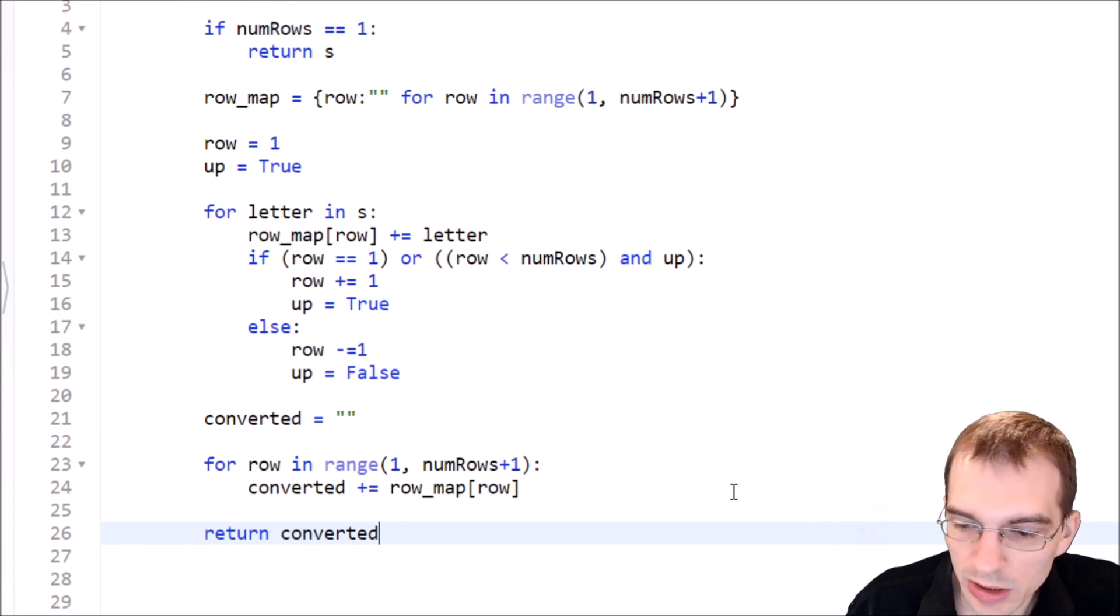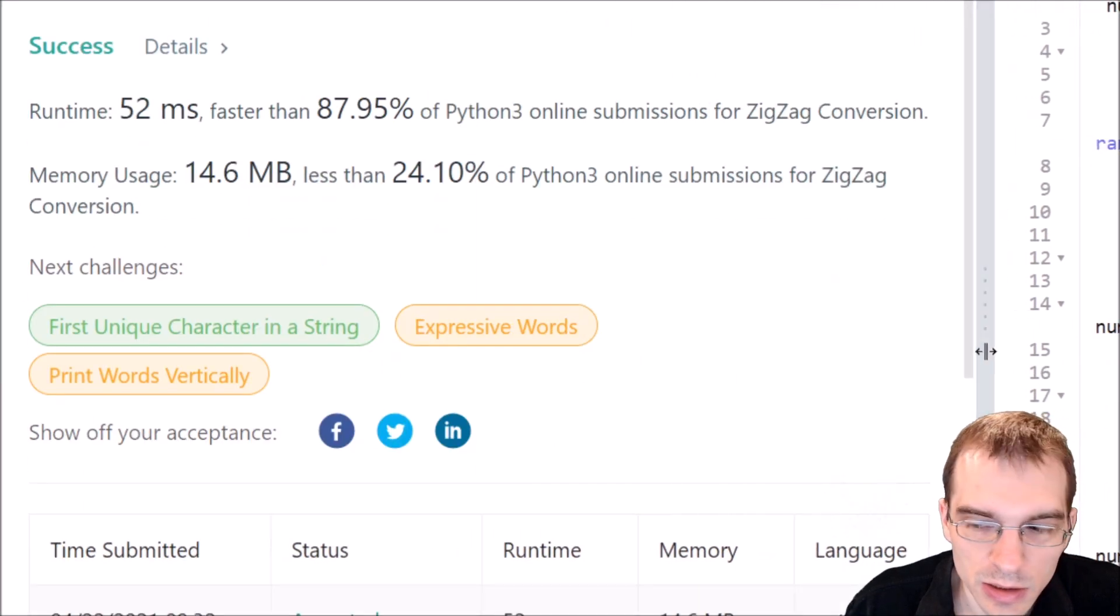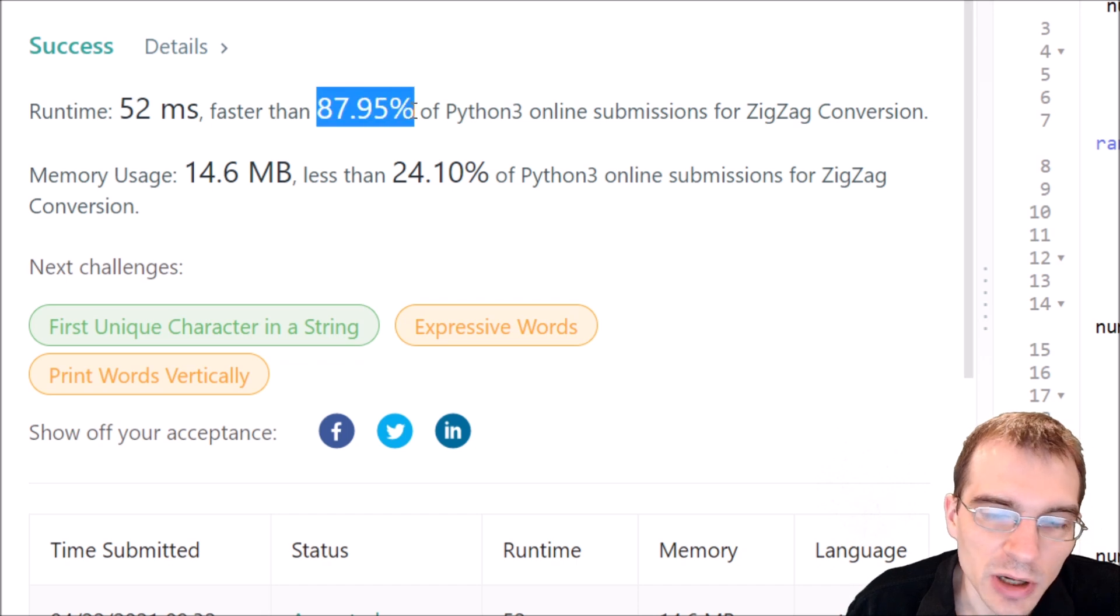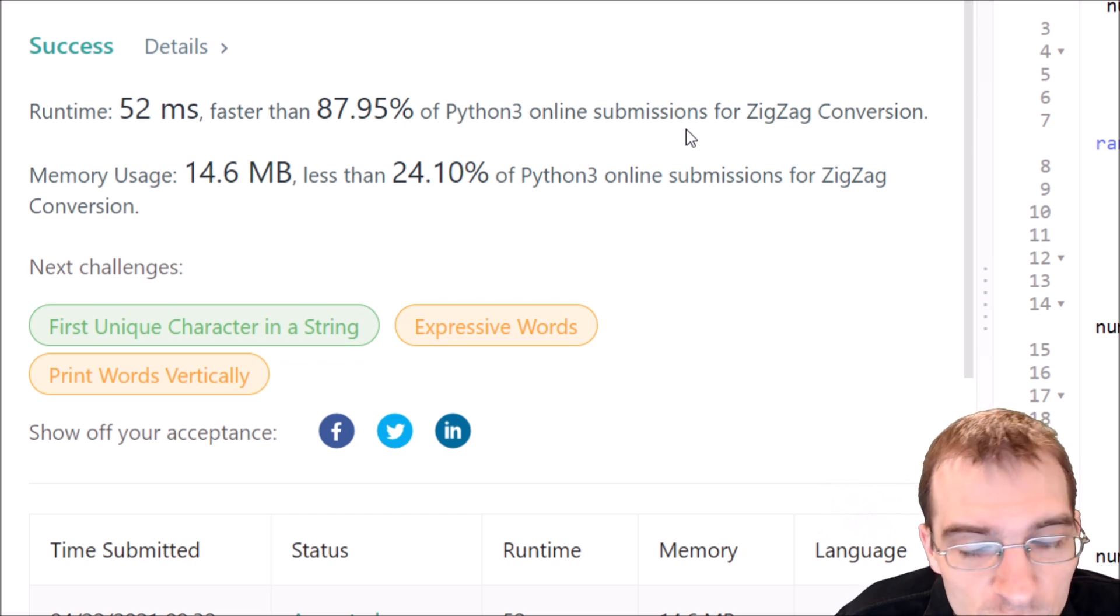I'm going to go ahead and click submit on this one. The submission did pass. We got a runtime of 52 milliseconds, which was faster than about 88% of other Python 3 submissions. That seemed like a reasonably efficient solution to this problem. If you found this video useful, you can drop a like or hit subscribe. Thanks for watching and keep coding.